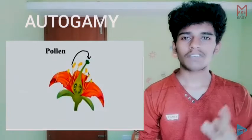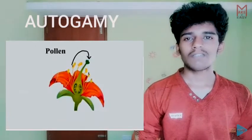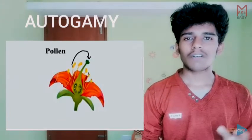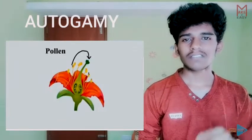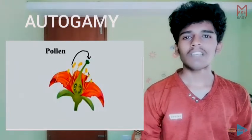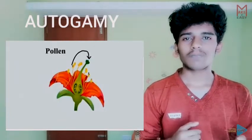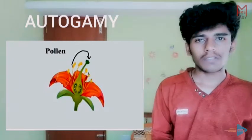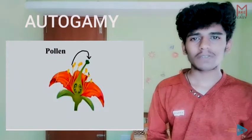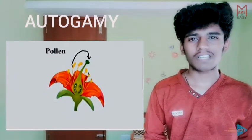In autogamy, it involves one flower. The pollen transfer happens within that same flower. This process occurs because the anther and stigma are very close to each other within the flower.